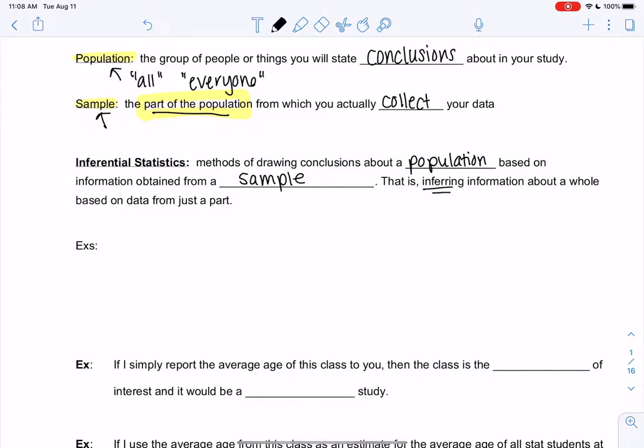So we're basically inferring, right, we're making conclusions about a bigger group. So we're inferring information about a whole based on just a part, where the whole is the population, but we've only collected data from a sample.